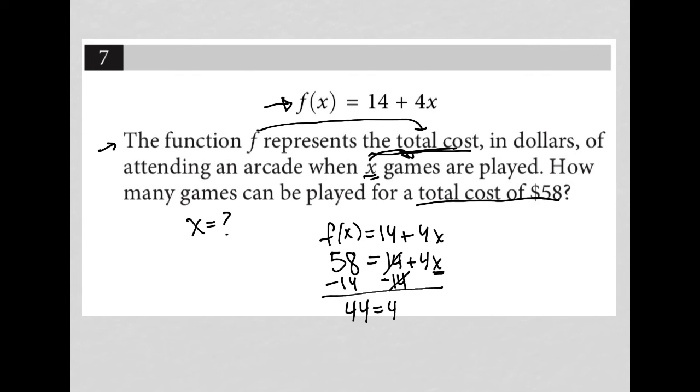So I have 44 equals 4x. I can then divide by 4 on both sides. My 4 is canceled there. And what I'm left with is that x is equal to 11. So my answer here is 11.